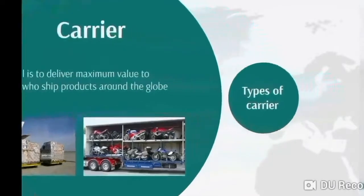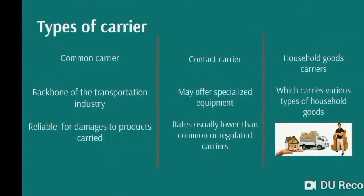Different types of carrier. The basic difference between a common carrier and a contract carrier is that a common carrier serves all types of people, whereas a contract carrier is only available for specialized categories. Contract carrier rates are usually lower than common carrier rates, but they are not responsible for damaging products. Besides that, a household goods carrier is also a valuable type which carries various types of goods.